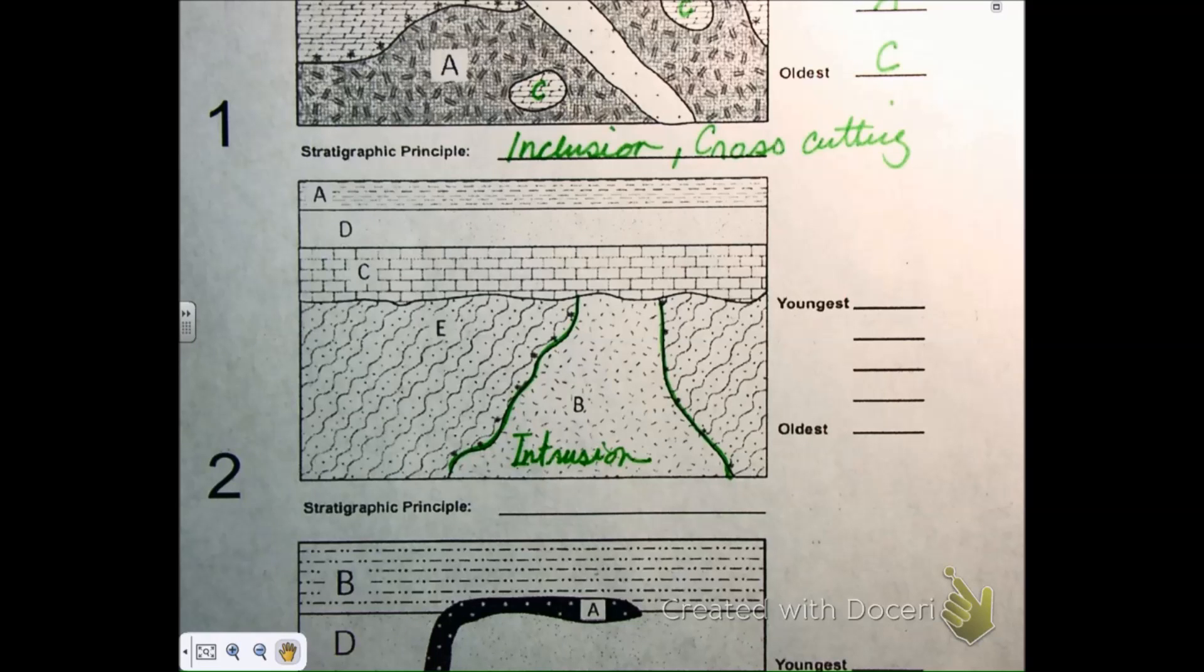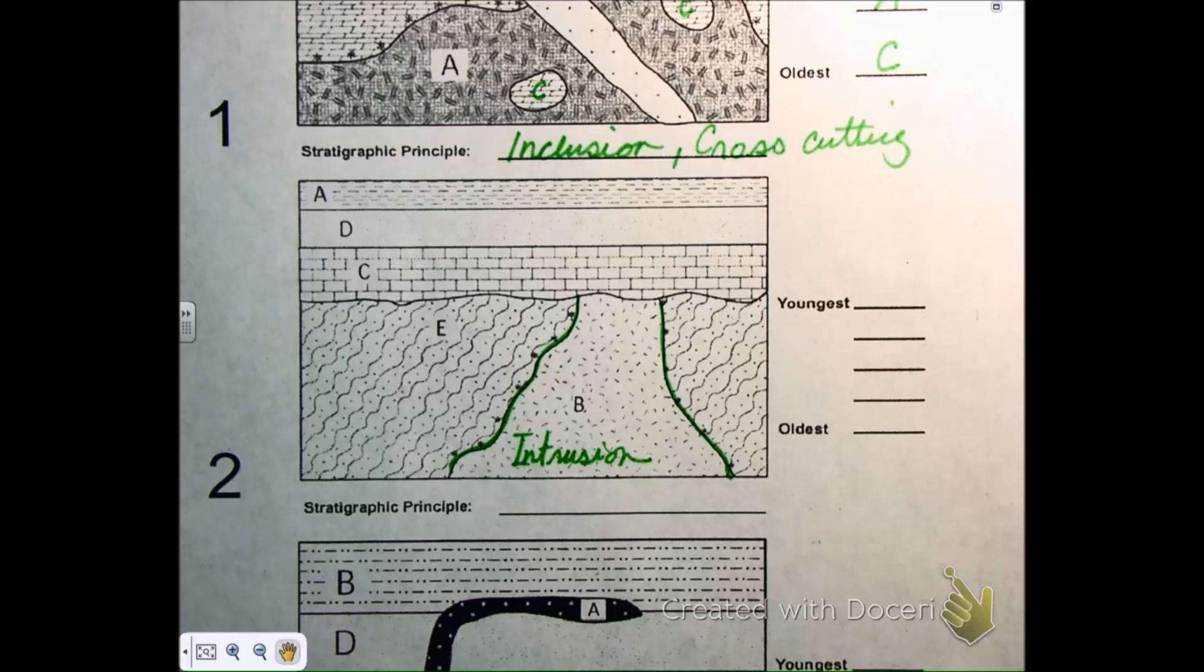All right, who would like to share what they put for the oldest layer? Ryan, what did you get and why? Because B is an intrusion into E, so E will have to be younger than... It's hard when it's B and E, I almost can't hear the difference between what you said. So you're saying the oldest is E as in elephant? Yes.